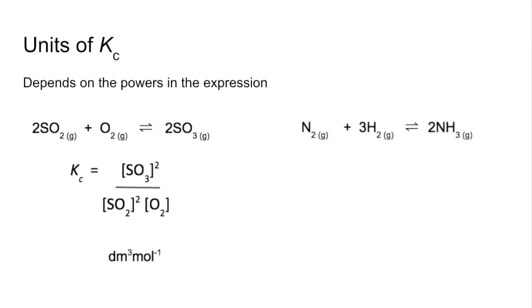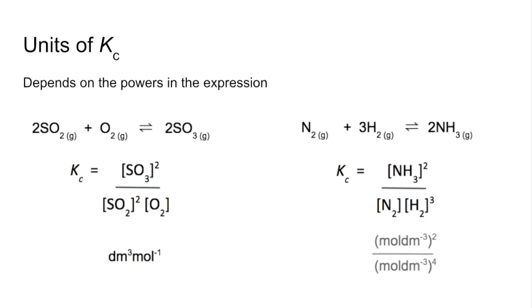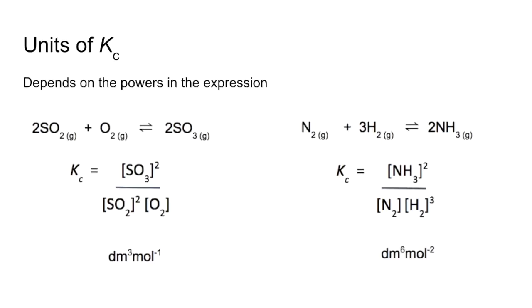In another example — the Haber process equilibrium — the Kc expression gives units of moles per decimetre cubed squared on top, to the power 4 on the bottom. That cancels down to 1 over moles per decimetre cubed squared, giving decimetres to the power 6, moles to the minus 2. If you have the same powers on the top and bottom, Kc has no units.